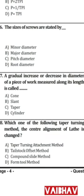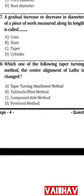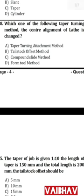Question 37 relates to taper — the answer is C — taper. Question 38: Which taper turning method is used where the center line alignment is changed? The answer is B — tailstock set-over method, where the tailstock is offset.